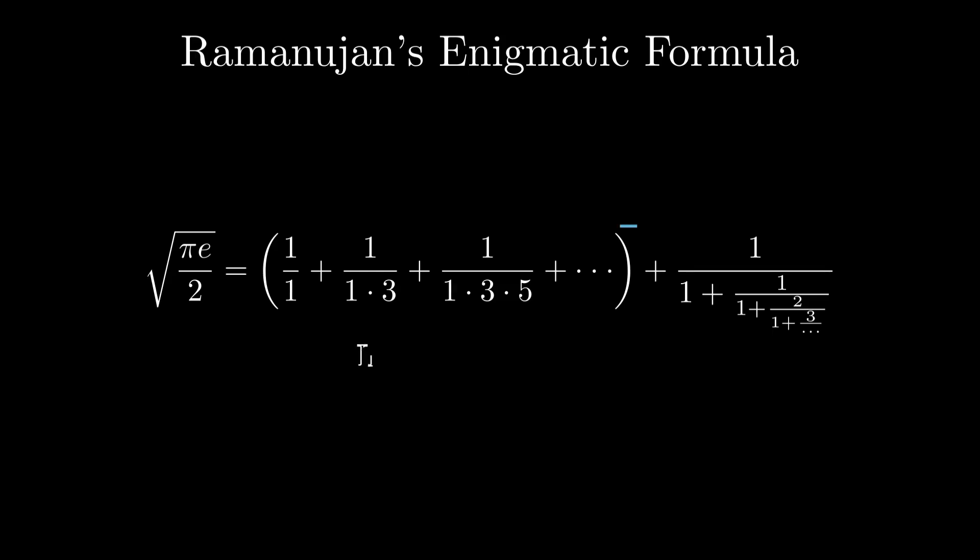The first part is an infinite series: 1 plus 1 over 1 times 3 plus 1 over 1 times 3 times 5, and so on. The second part is a continued fraction: 1 over 1 plus 1 over 1 plus 2 over 1 plus 3, and it goes on infinitely. Remarkably, this entire expression equals the square root of pi e over 2. But how is this possible?